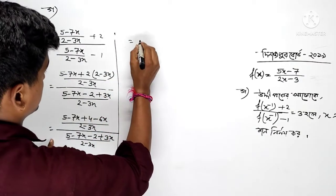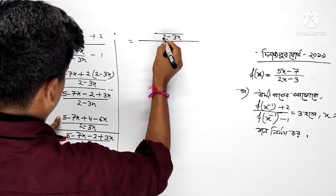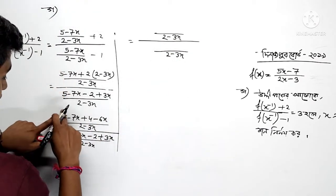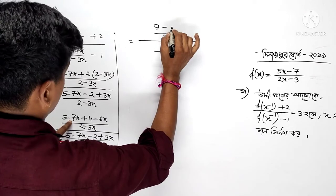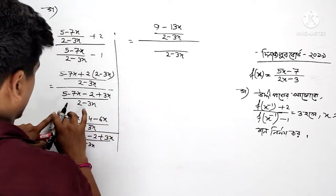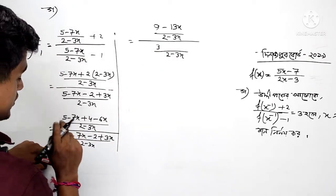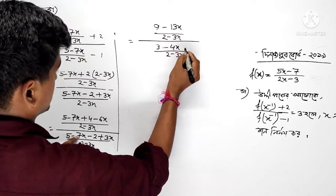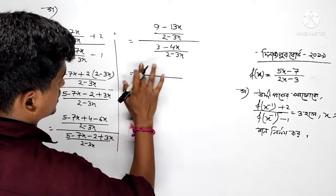And someone — two minus three X, two minus three X, two minus four X.